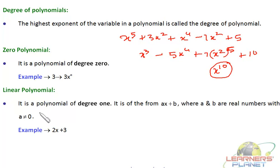Similarly, linear polynomial is what? It is a polynomial of degree 1, and it is of the form ax plus b, where a and b are real numbers and they can be any non-zero numbers.